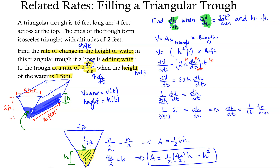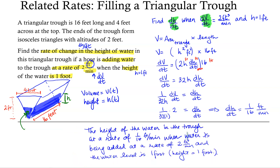Let's interpret that within the context of the problem. The height of the water in the trough is increasing at a rate of 1/16 foot per minute when water is being added at a rate of 2 cubic feet per minute and the water level is 1 foot. I hope you find this helpful.